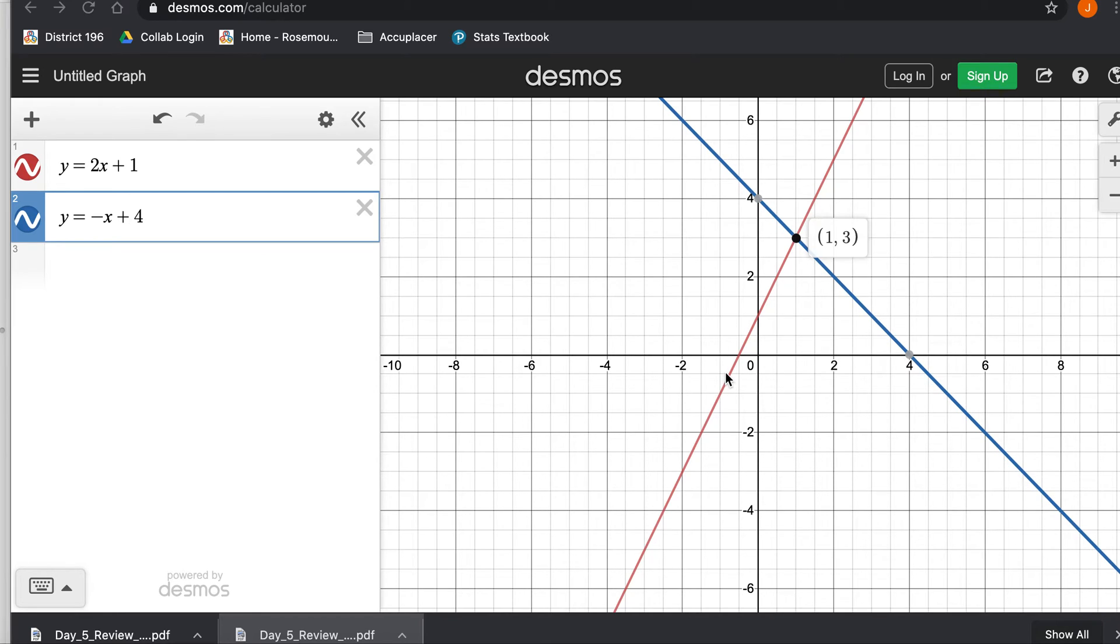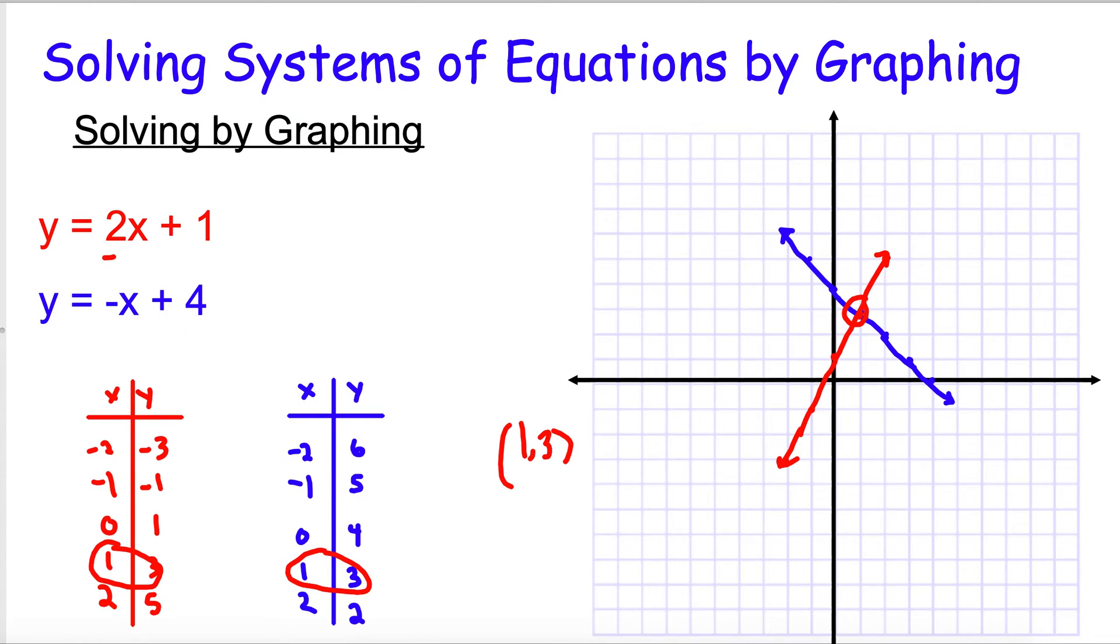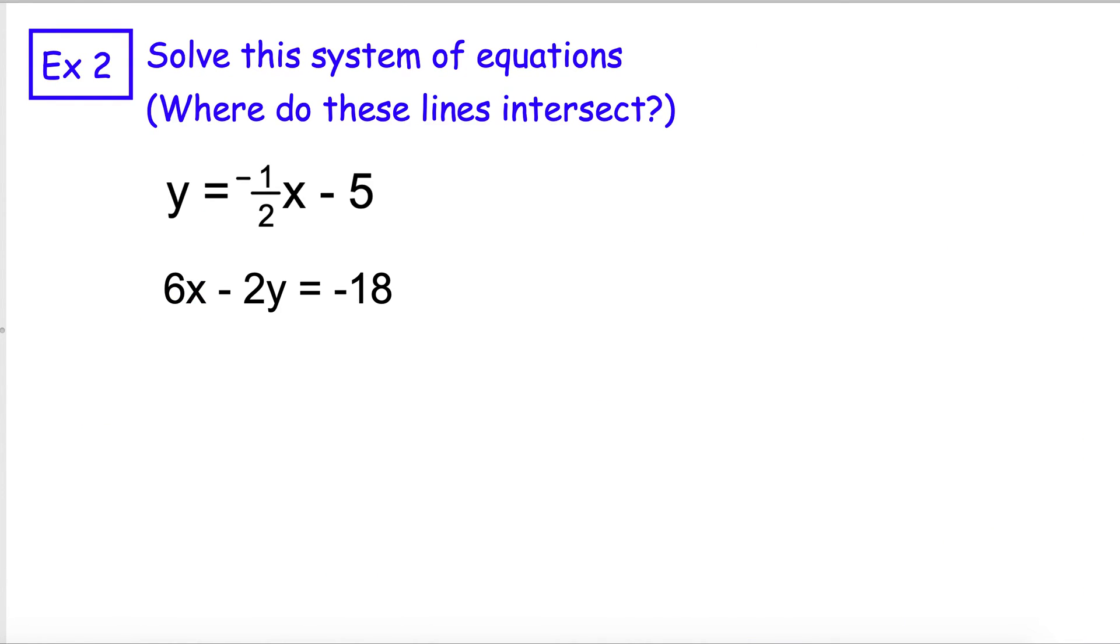So if we go back here, let's look at a couple more examples. And rather than coming up with a table each time and graphing them, let's just graph these on Desmos. So y equals negative 1 half x minus 5, and then 6x minus 2y equals negative 18. What I'd encourage you to do here is just write these down and then head over to Desmos and type those in and see if you can get the intersection without me showing you how to do it.